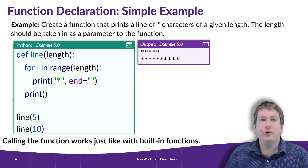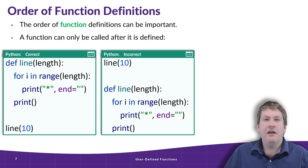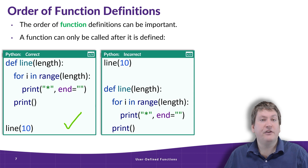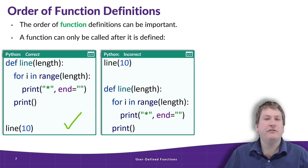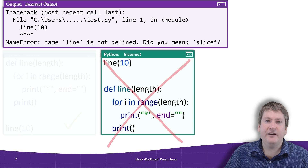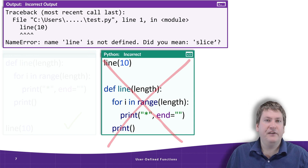The order of when we call the function versus when we define the function is quite important. We can only call functions that have already been defined. We define the function first, and then we call it. If we tried to flip this around — calling the function first and then defining it — this would not work. We would get an error saying 'name line is not defined.' An important point here is that we have to define our functions before we use them, just like we have to define our variables before we use them. So keep in mind, the order we define functions in can be important.